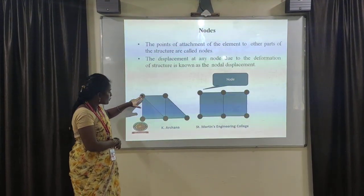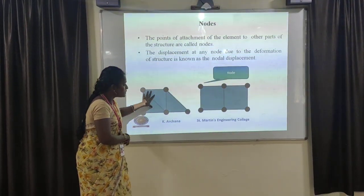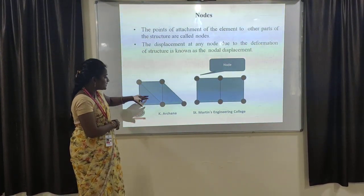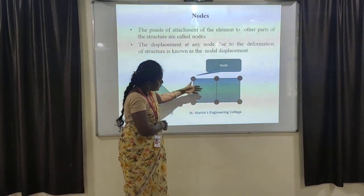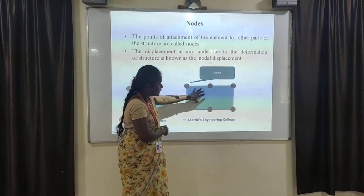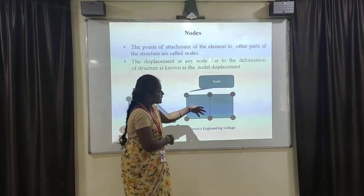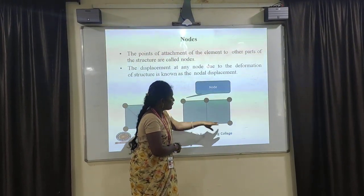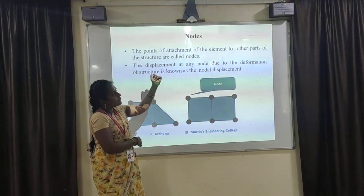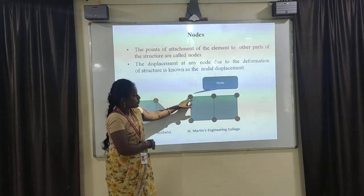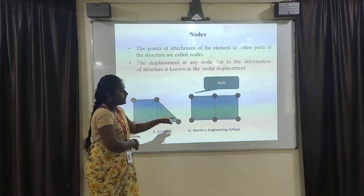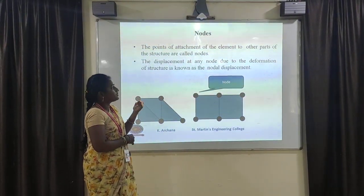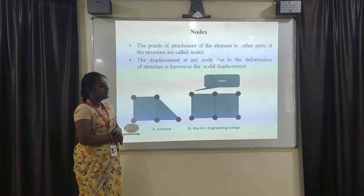Once the object is divided into a number of elements, nodes are created. Two elements meeting at a particular point form a node. Here there are five nodes and three elements for the triangular section. For a rectangular object divided into two square parts, we find seven nodes. The points of attachment of an element to other parts of the structure are called nodes. The displacement at any node due to the deformation of the structure is known as the nodal displacement.